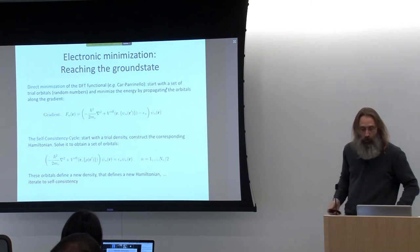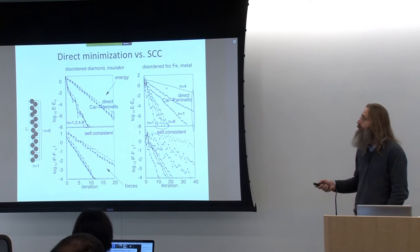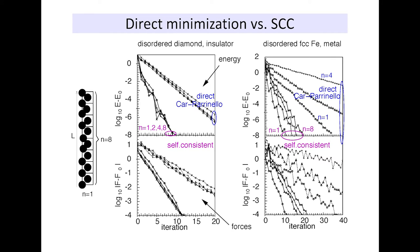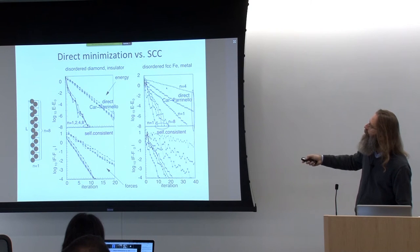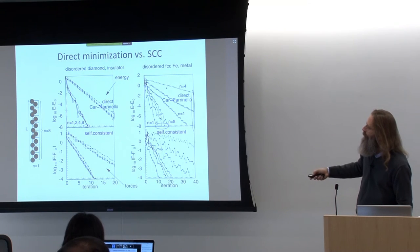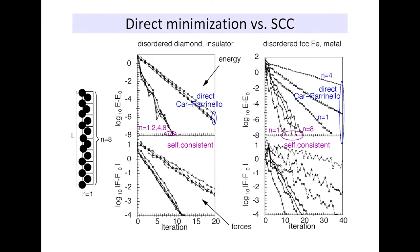The self-consistency cycle was shown to be a bit more efficient than direct optimization, especially for metallic systems. Comparing the two: in the self-consistency cycle, convergence still manages in a reasonable number of iterations even for larger cells. But if the cell becomes large in a certain direction, direct minimization will have huge trouble finding the ground state. So we tend to rely on the self-consistency cycle and charge density mixing.